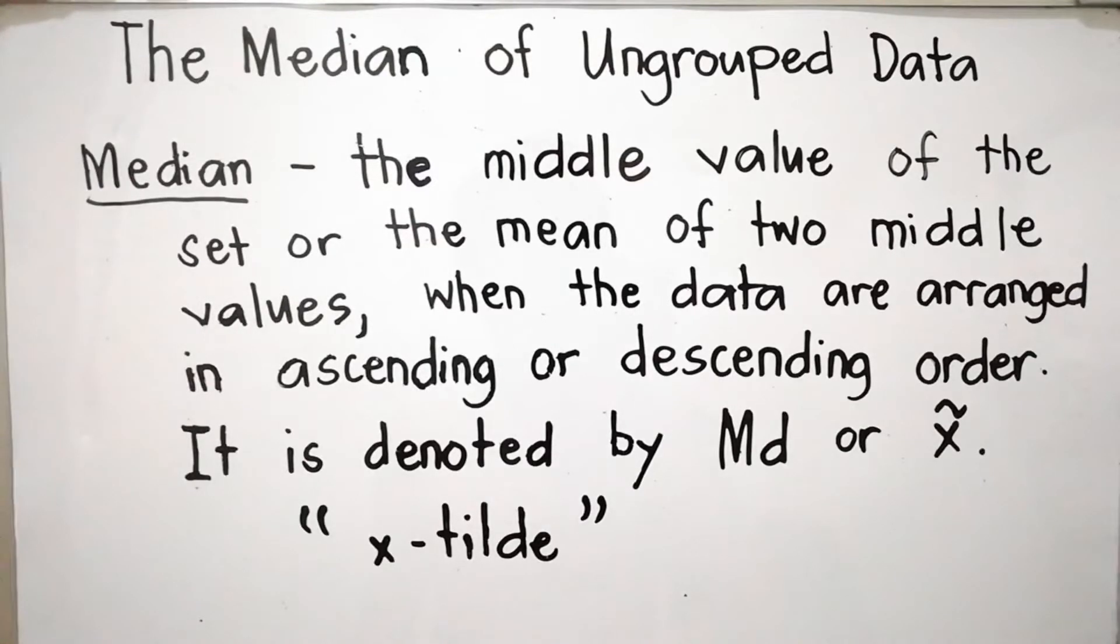The median is a positional measure, therefore the median is not affected by individual items or the extreme values, but it is affected by the number of items.